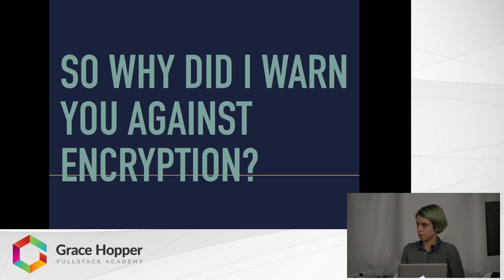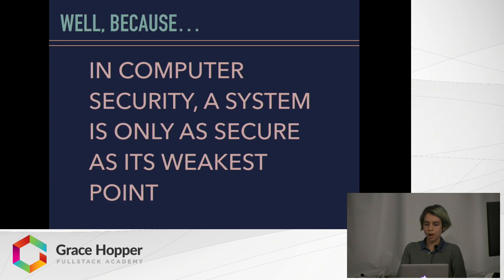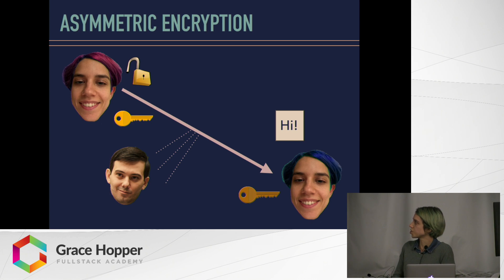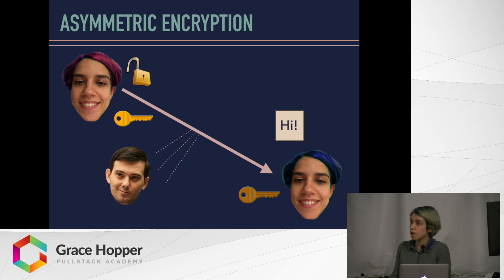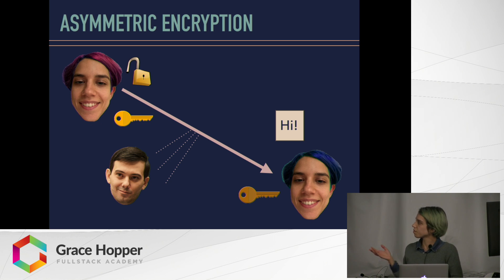So why did I warn you against encryption at the beginning of this talk? Well, because in computer security, a system is only as secure as its weakest point. Even with asymmetric encryption, we have a problem: I'm sending out this open lock. Let's say Martin Shkreli gets the open lock — he pretends he's person B, encodes a message, and sends it back to person A. I think the message is from person B, I open it, maybe it contains malware, and I don't know because I'm not looking for that. I'm expecting a message from person B, and my system's been infected. So even with this cool solution, there are gaps in security.